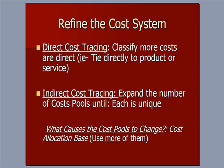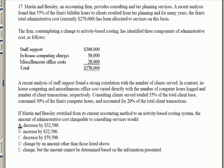What causes cost pools to change? The cost allocation base — we want to use more of them. In prior videos we found that generally machine hours or labor hours in a manufacturing environment are used to allocate costs, but we want to make them as specific as possible. To explain this concept, I want to jump to a great question a student of mine sent me that was on an exam.